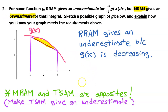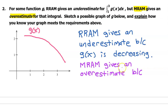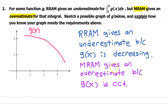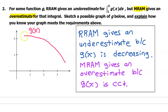With the new sketch — still decreasing but now concave down — the trapezoid gives an underestimate because it misses yellow area under the curve. Since TSAM gives an underestimate, that means MRAM gives an overestimate. The justification is: MRAM gives an overestimate because g of x is concave down — do not mention TSAM in the justification. This new sketch satisfies both conditions: RRAM gives an underestimate because g of x is decreasing, and MRAM gives an overestimate because g of x is concave down.